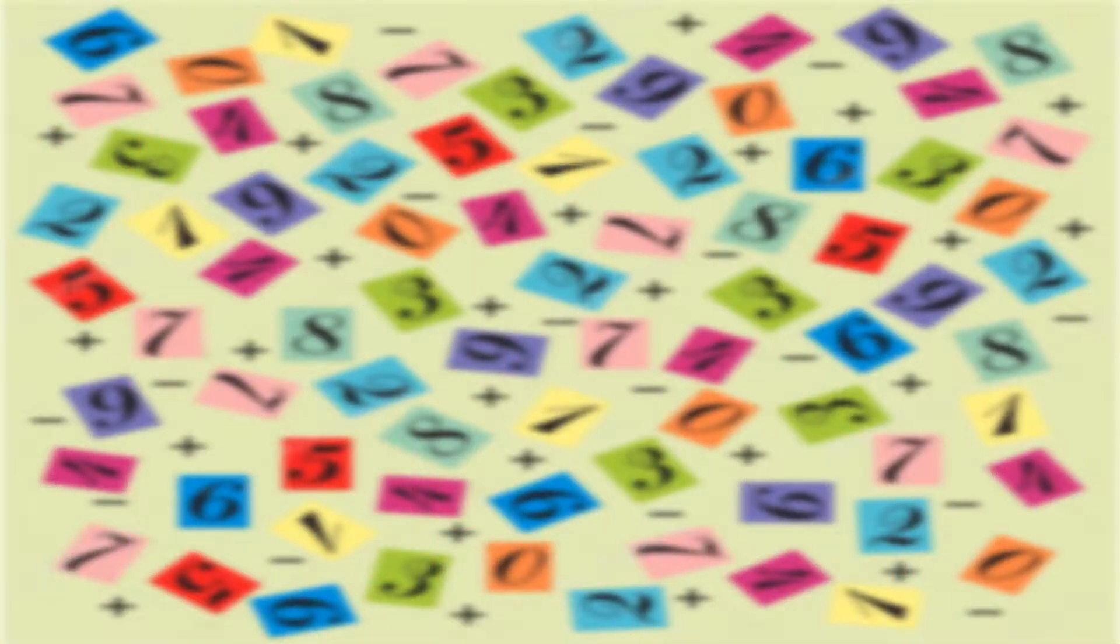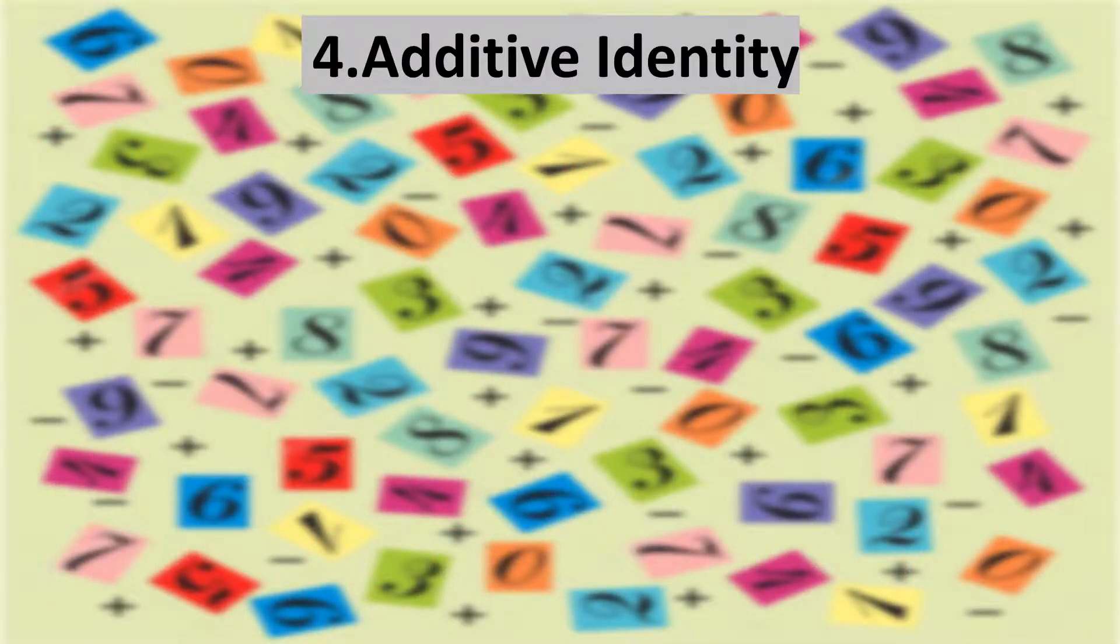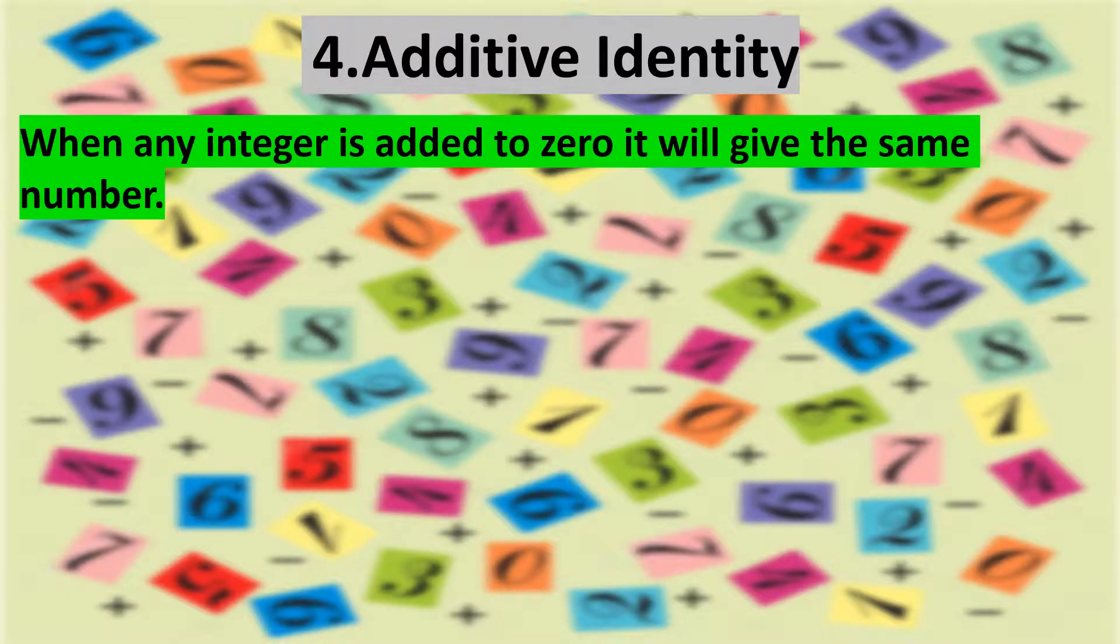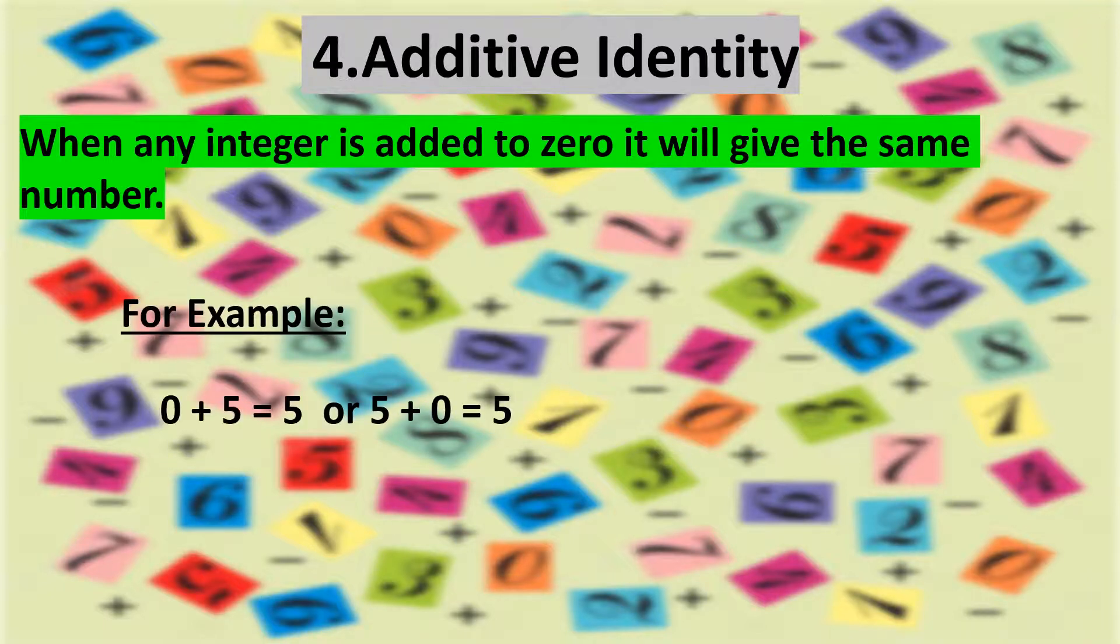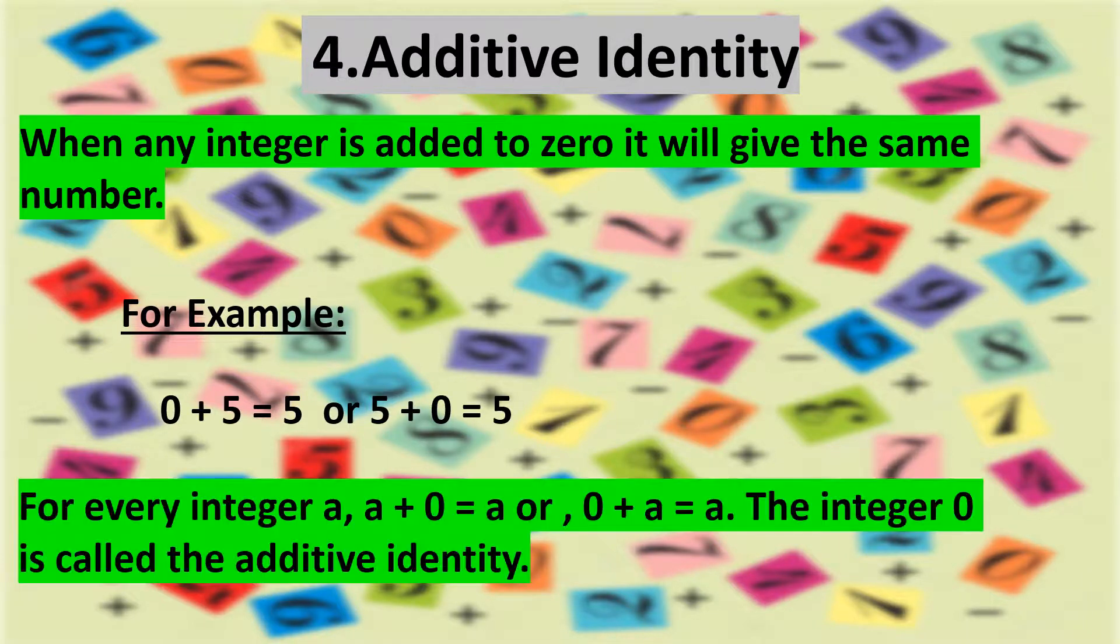Let us now discuss additive identity. This property states that when any integer is added to 0, it will give the same number. For example, 0 plus 5 is equal to 5 or 5 plus 0 is equal to 5.